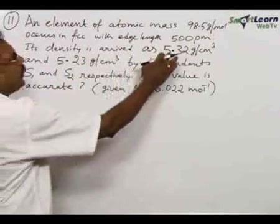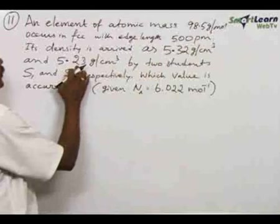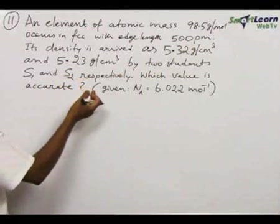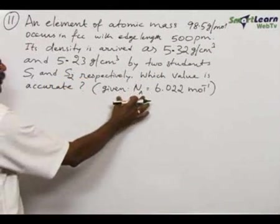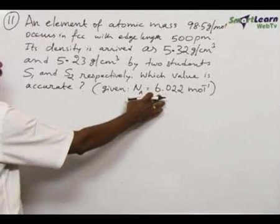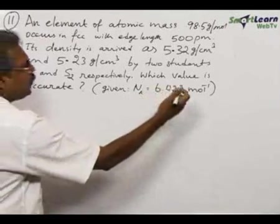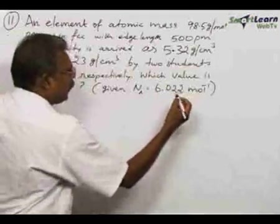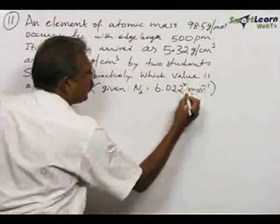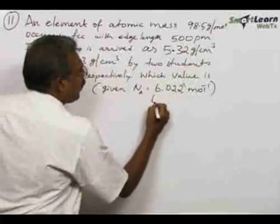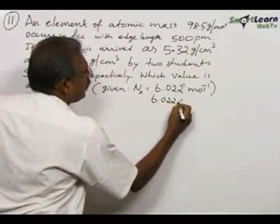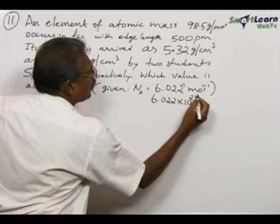One arrived at 5.32, another at 5.23. Which value is correct? The better way is to calculate the Avogadro constant because this is 6.022 × 10²³ per mole.